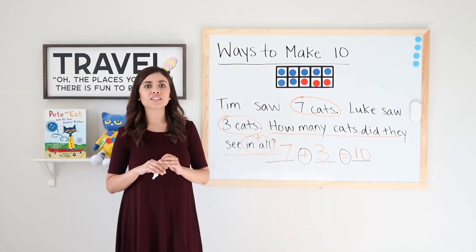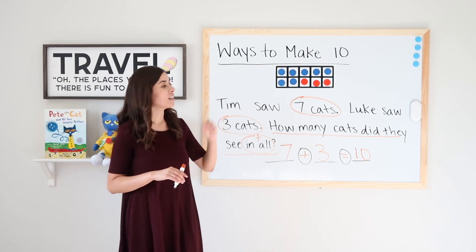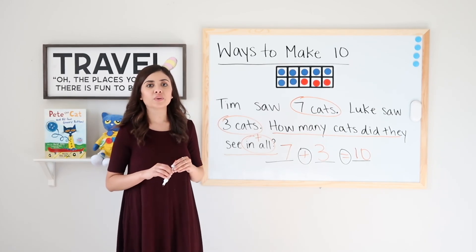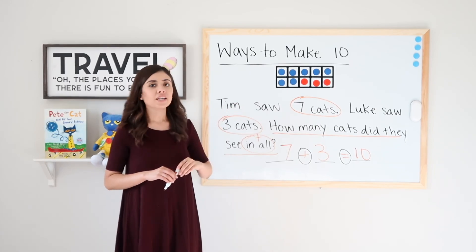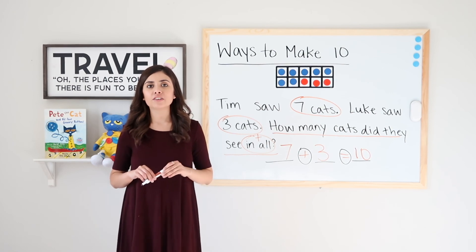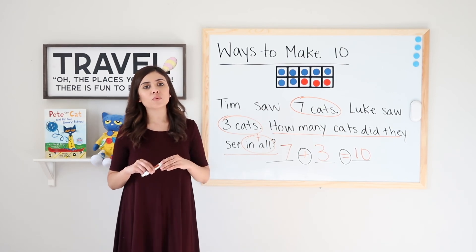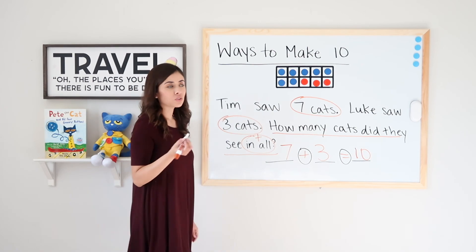Okay, so that ends today's lesson on ways to make ten. I really hope you enjoyed this video and working with a ten frame. Now, if you don't have a magnetic ten frame like I do, you can go ahead and draw one at home. So to do so, all you have to do is make a rectangle, draw a line that goes horizontally across the middle.